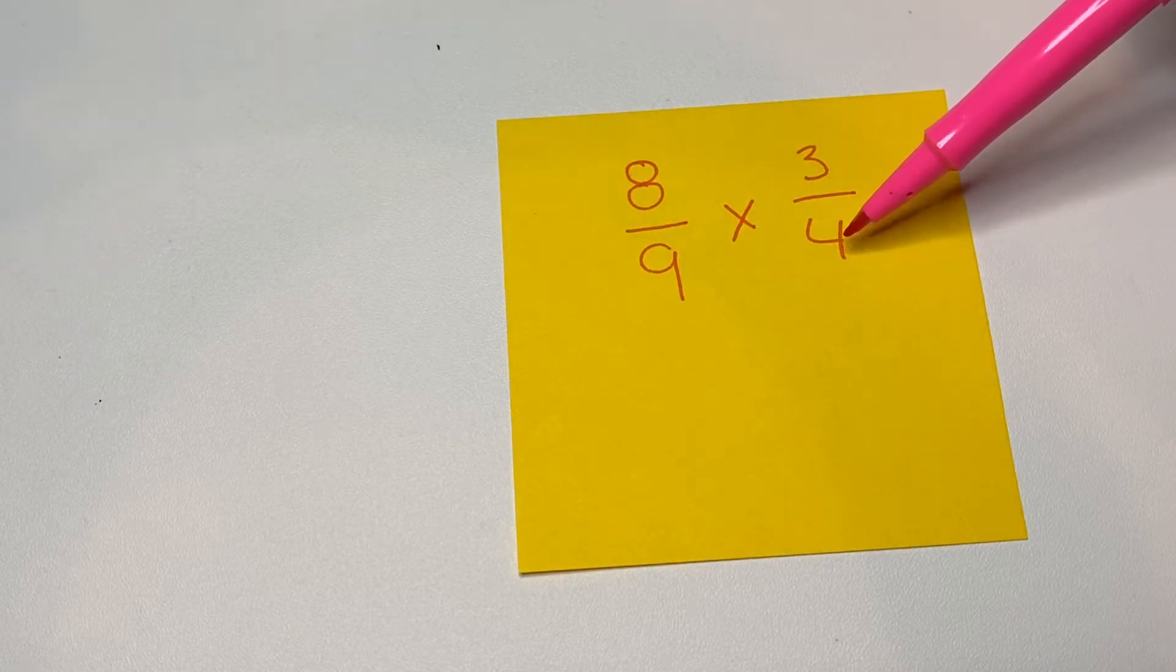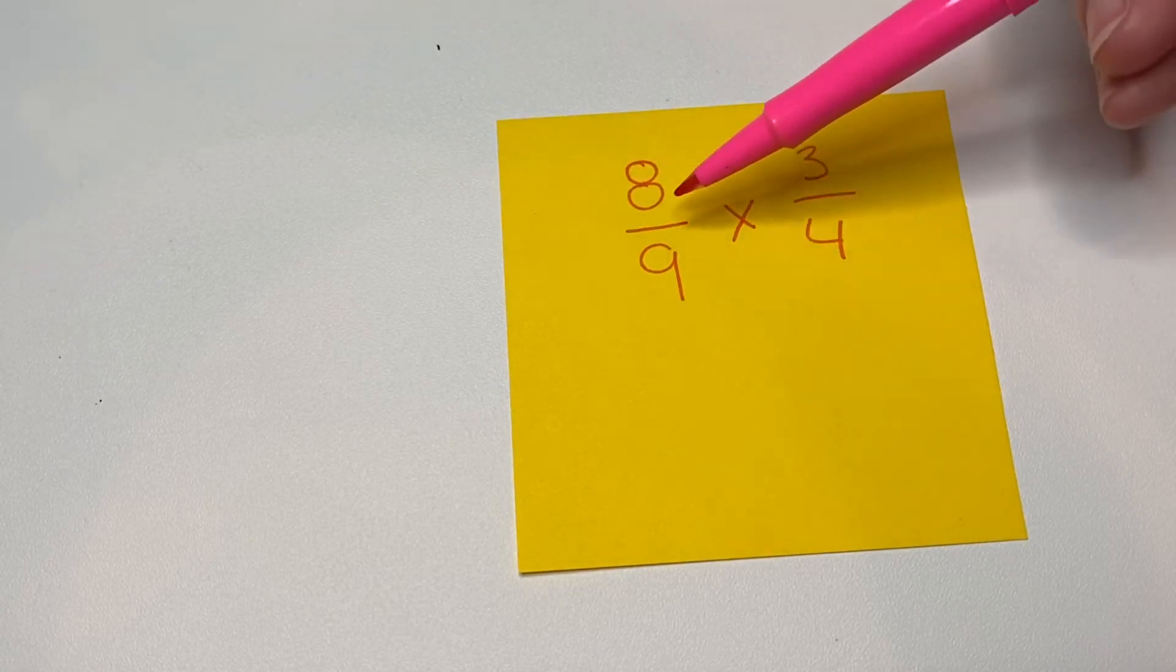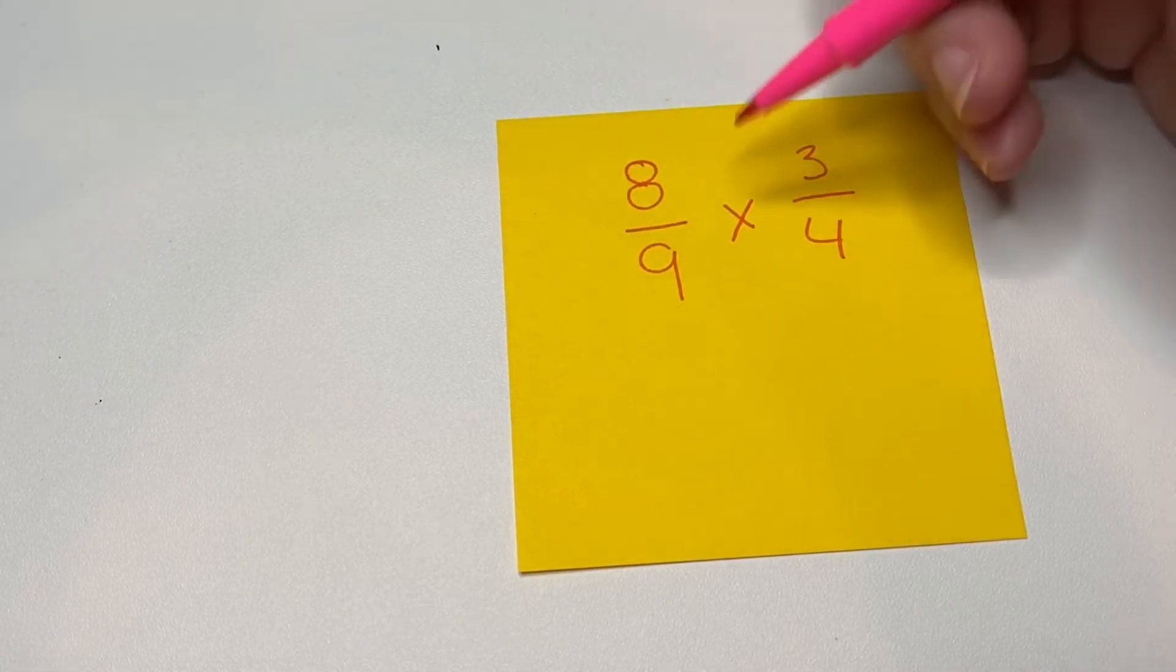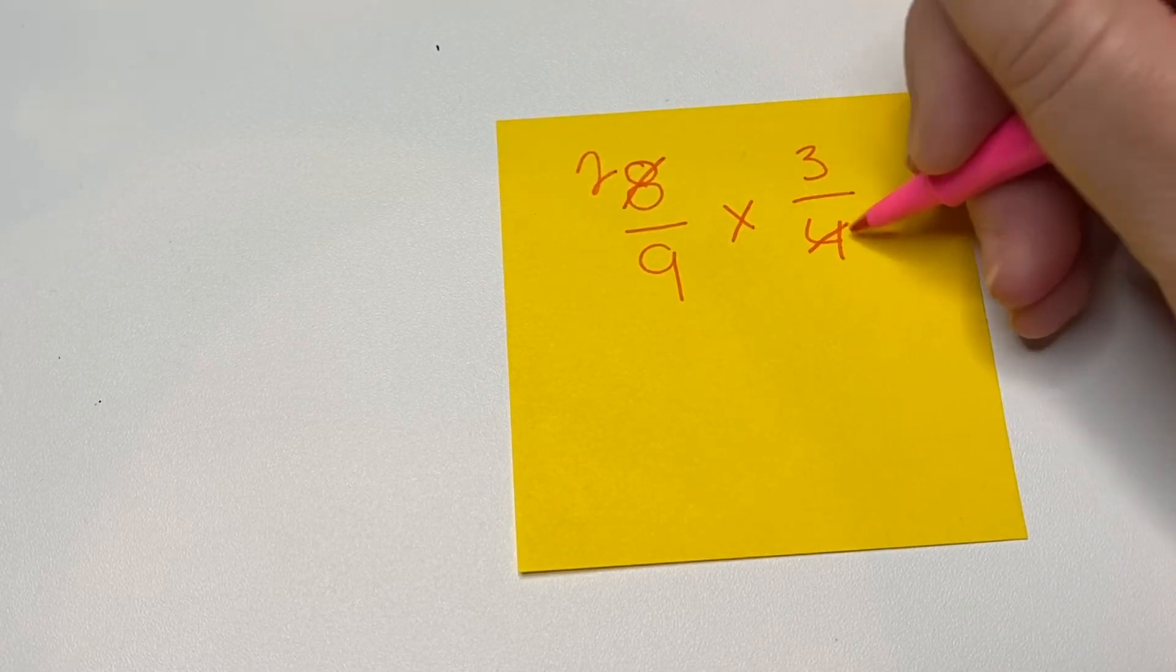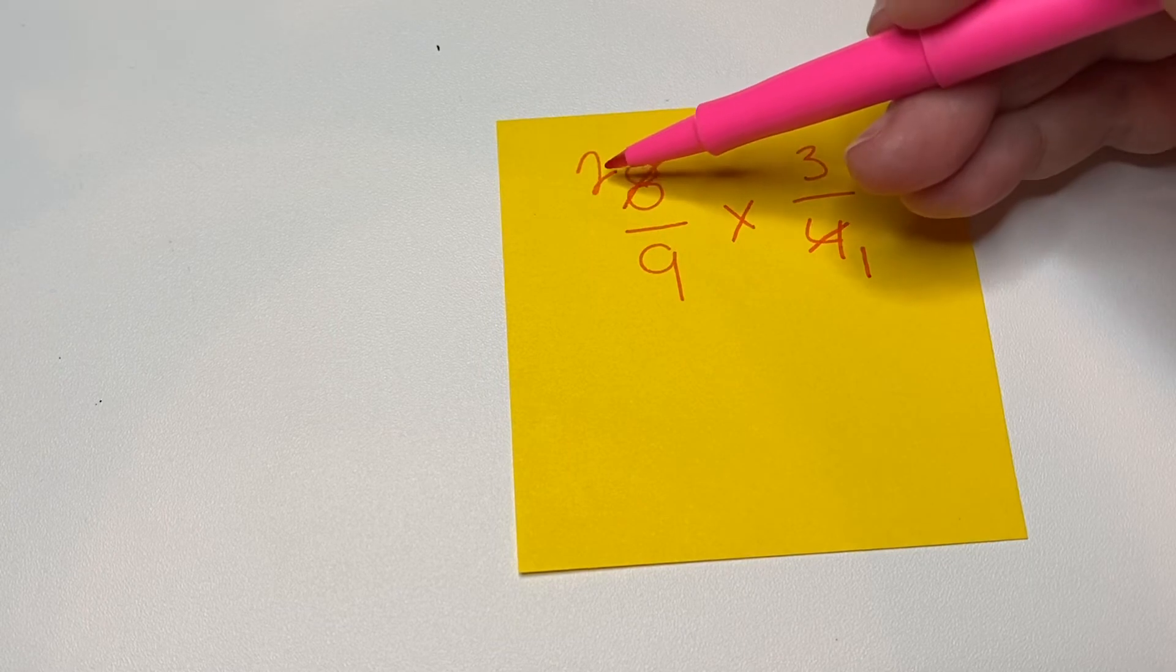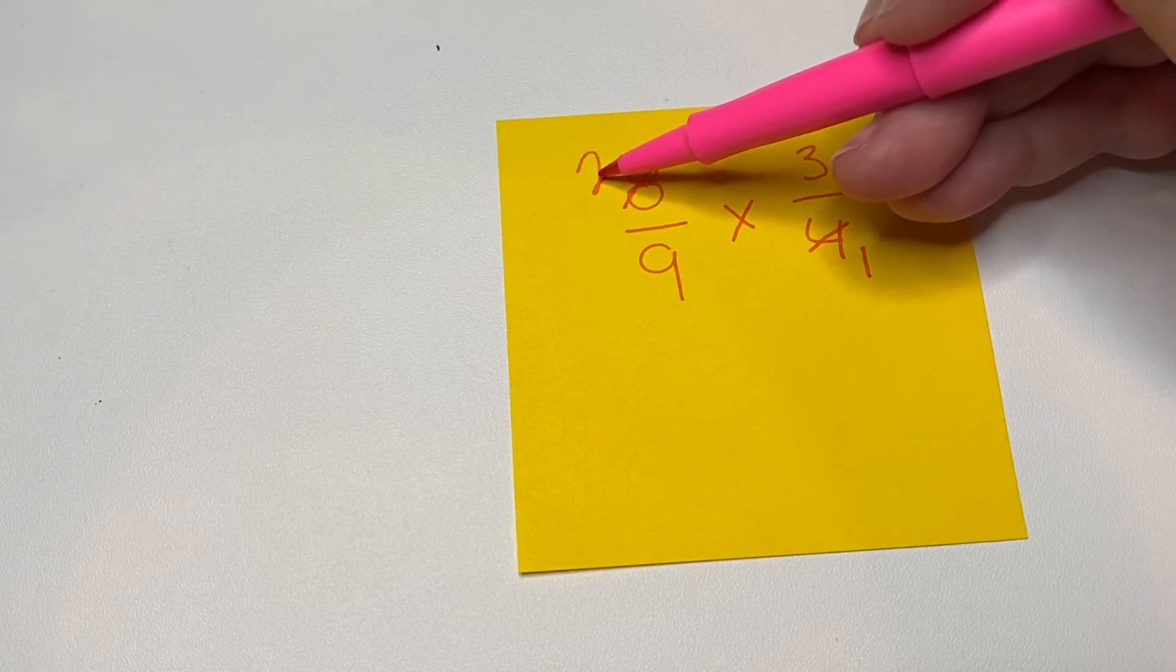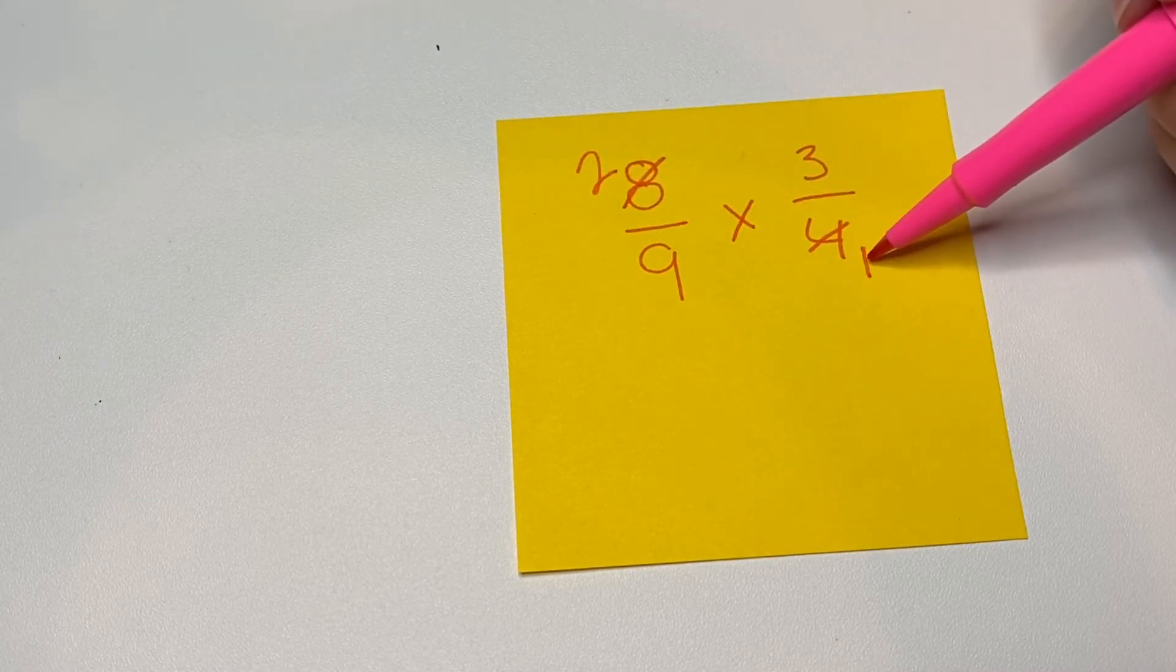In this case, they do. Four goes into both of them. So four goes into eight two times. And four goes into four one time. So we're actually changing. Now we're going to use this as our numerator two, and this is the denominator over here is one.